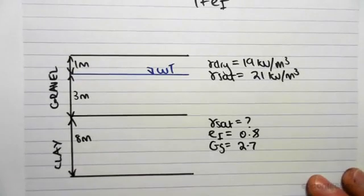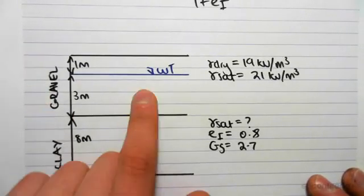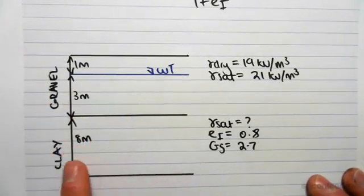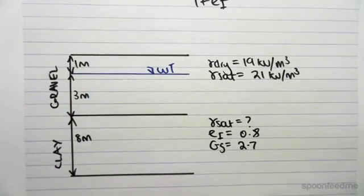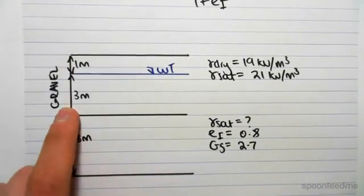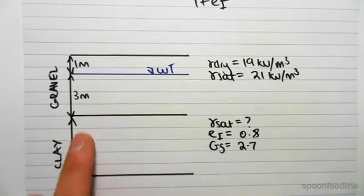Here's our example. We've got a layer of gravel with a water table at one meter below the surface and we've got a layer of clay. Now we're not so concerned about the gravel settlement, it's not going to settle too much, but the clay will settle.